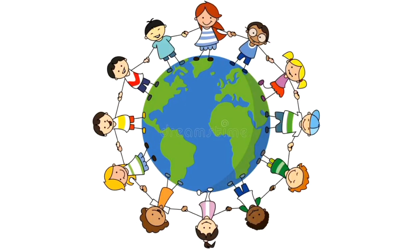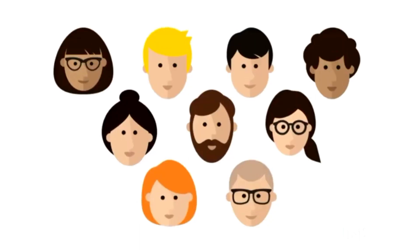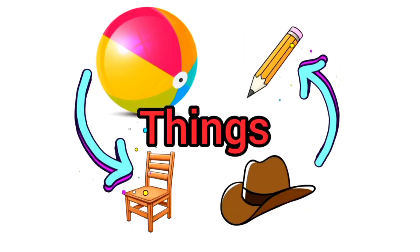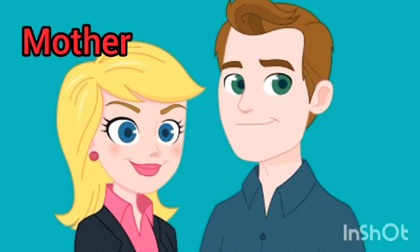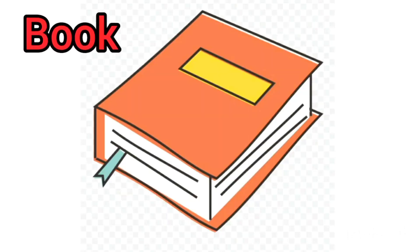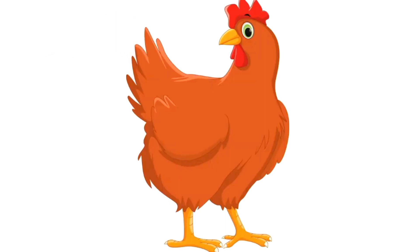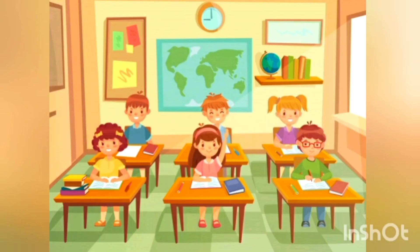Now children, let's revise it again. Everything around us has a name — such as people, places, animals, and things. All naming words are called nouns. Mother, father, school, book, table, cow, and hen are all naming words or nouns.